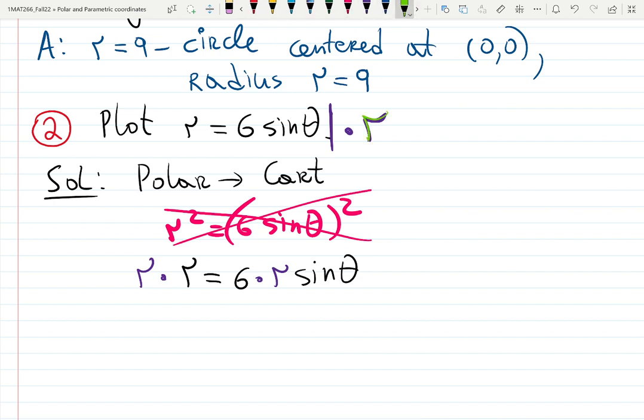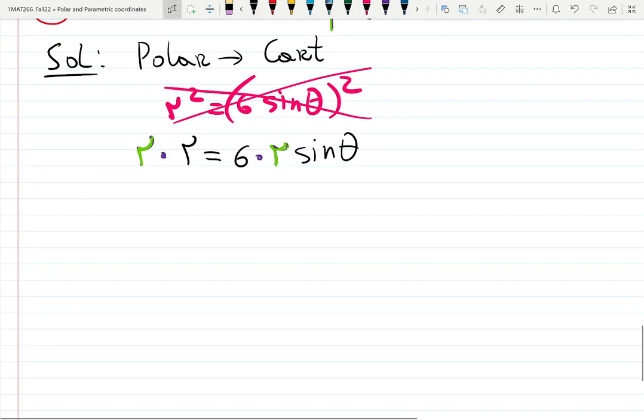Then we will have r times r, which gives you r squared. 6 times r sine theta. So I multiply it by r, both sides. Maybe it's not visual enough. Let me put it in green. Multiply by r, both sides.